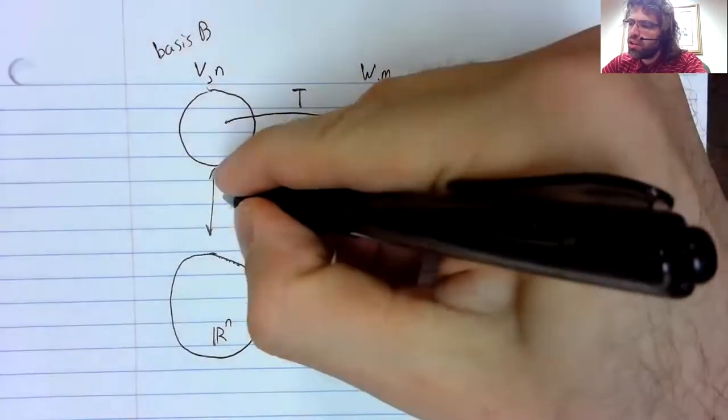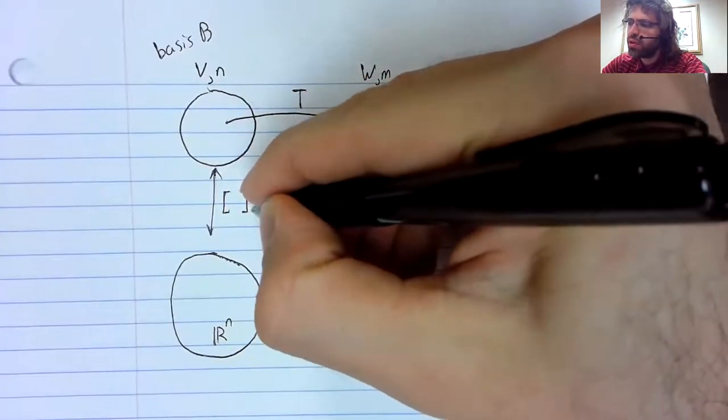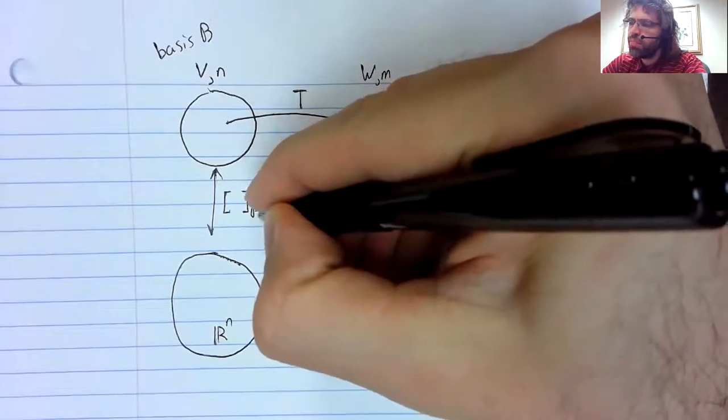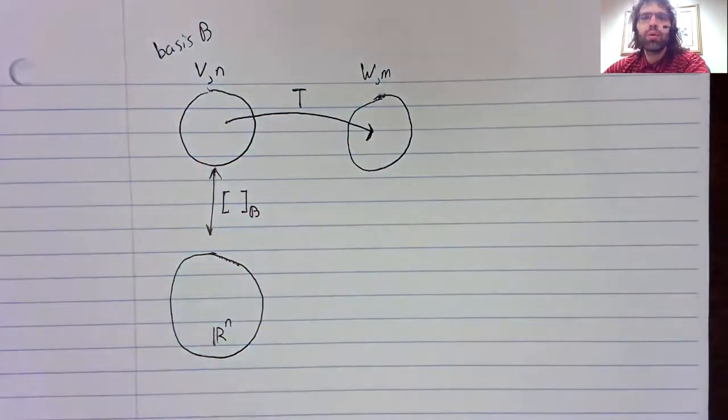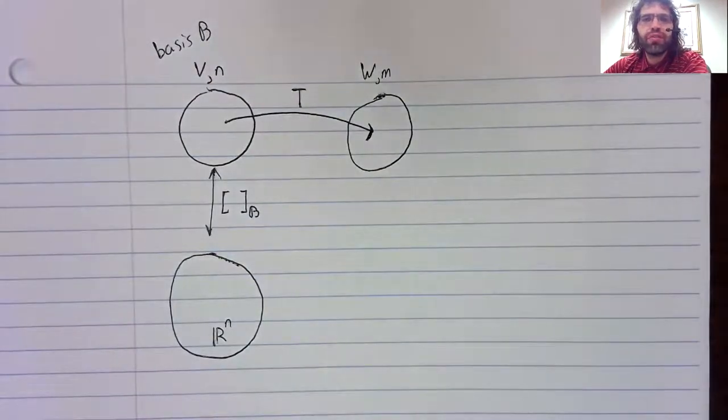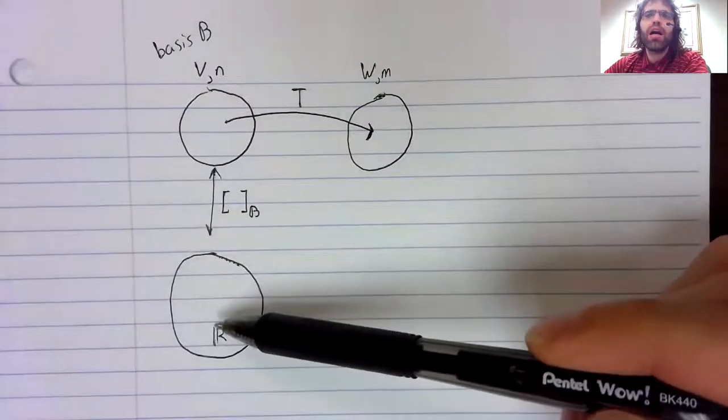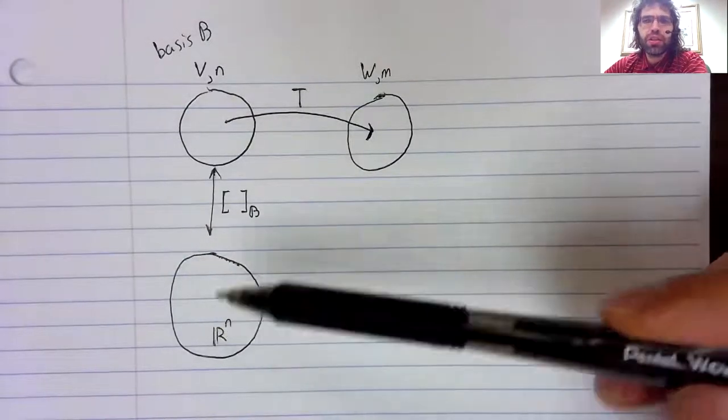Then the coordinate transformation is an isomorphism. And that means that from a vector space point of view, V and R^n are indistinguishable.